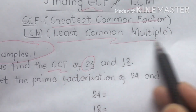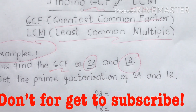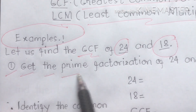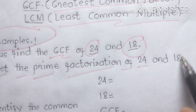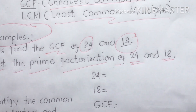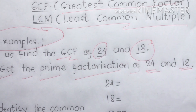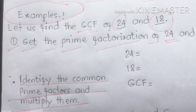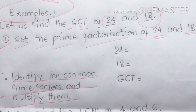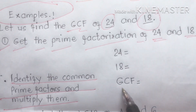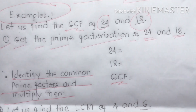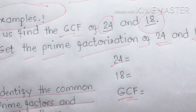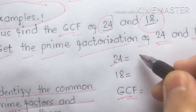For example, let us find the GCF of 24 and 18, and the LCM of 4 and 10. First, you are going to get the prime factorization of 24 and 18. We are going to identify the common prime factors and then multiply them. Let's start with 24.